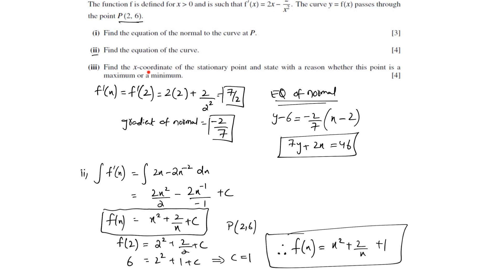In the third part, they are saying find the x coordinate of the stationary point and state with a reason whether this point is a maximum or minimum. In order to find the stationary point, you will have to set dy/dx or f prime of x equal to 0 and find the value of x. Then, in order to find whether this point is maximum or minimum, you take the second derivative and find the nature of the curve.